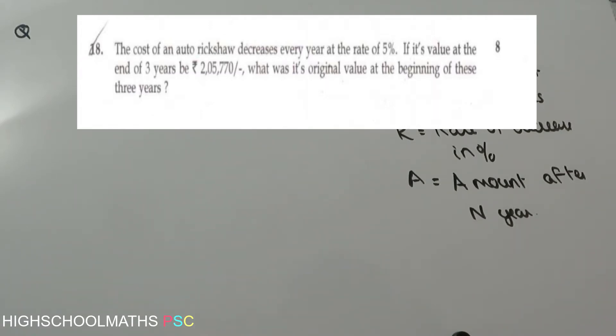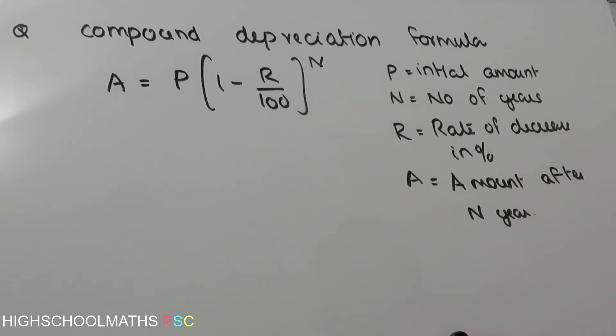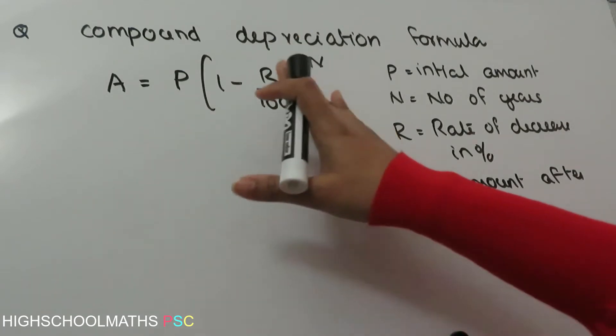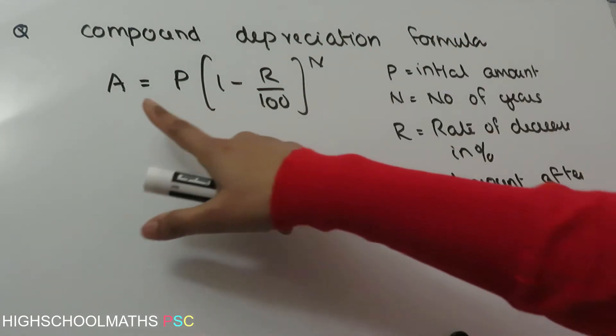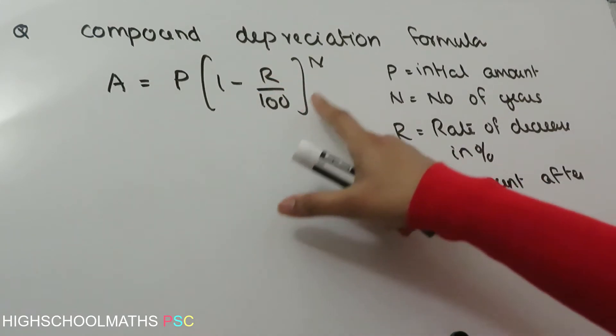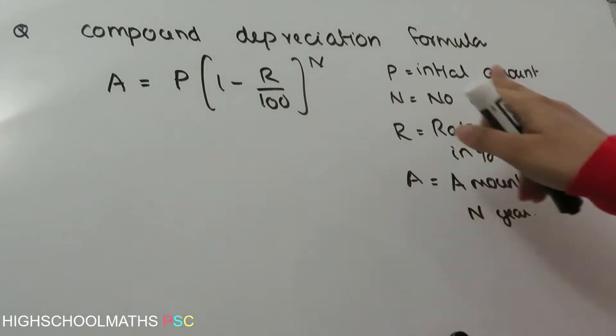Now, we have the value at the end of 3 years. We use the Compound Depreciation Formula: A is equal to P into (1 minus r by 100) the whole raised to n.